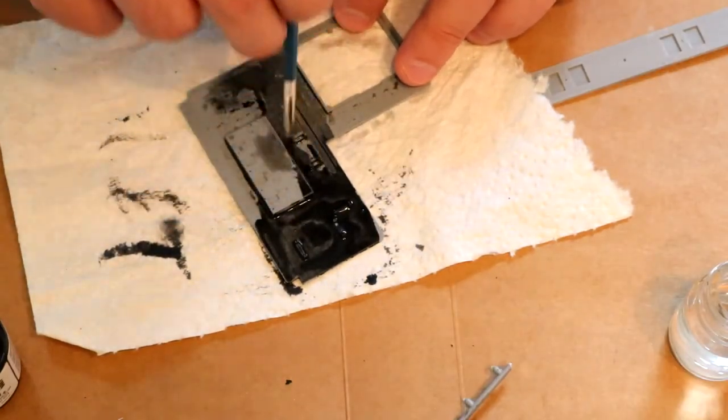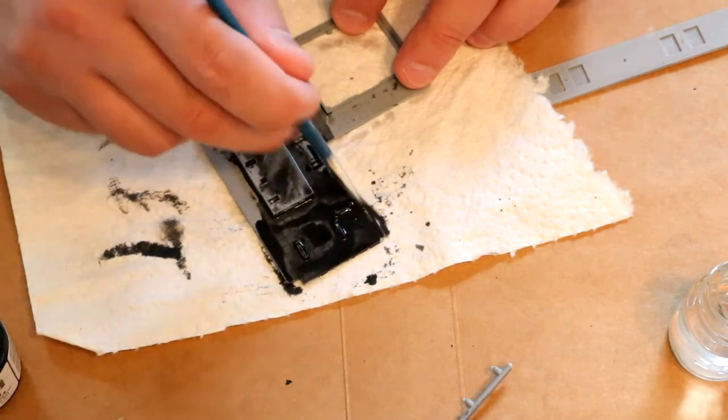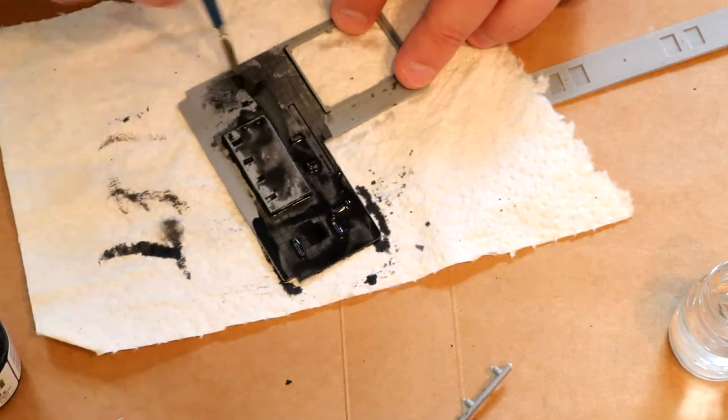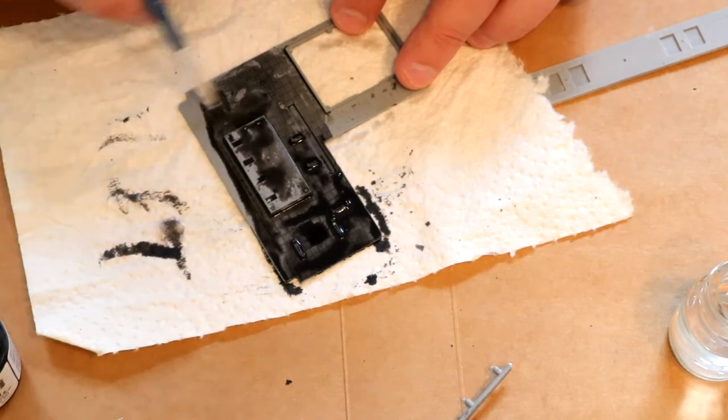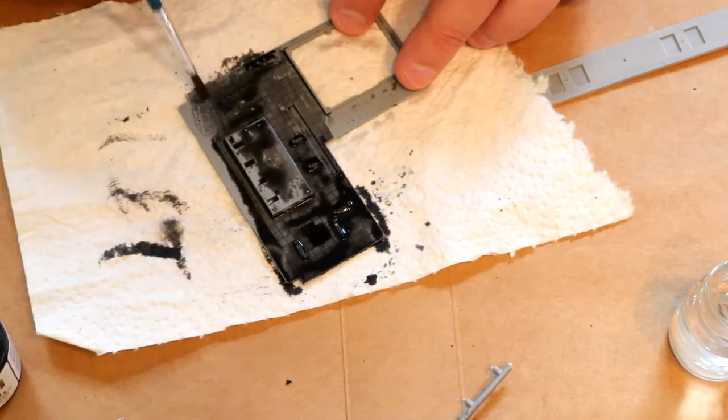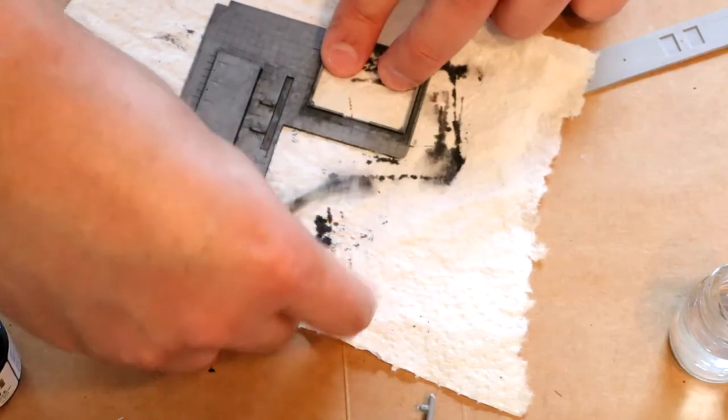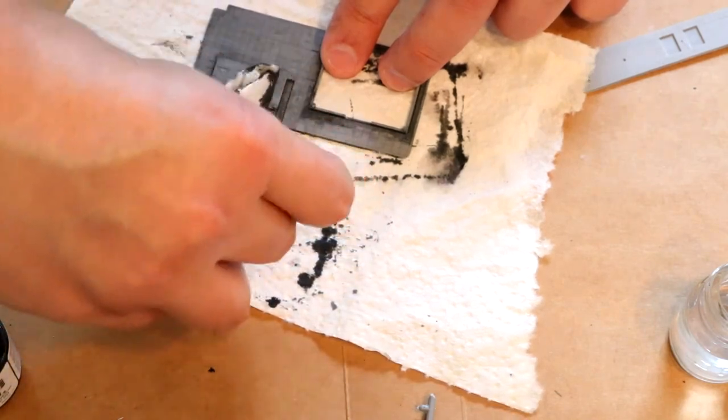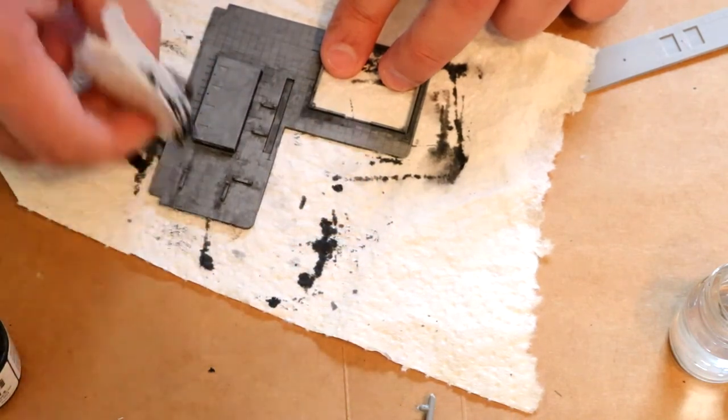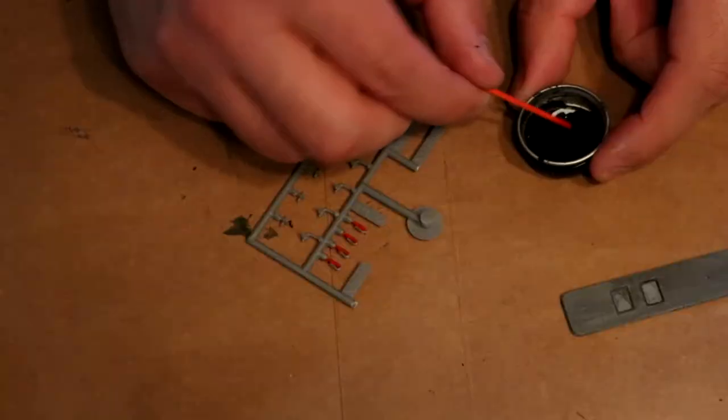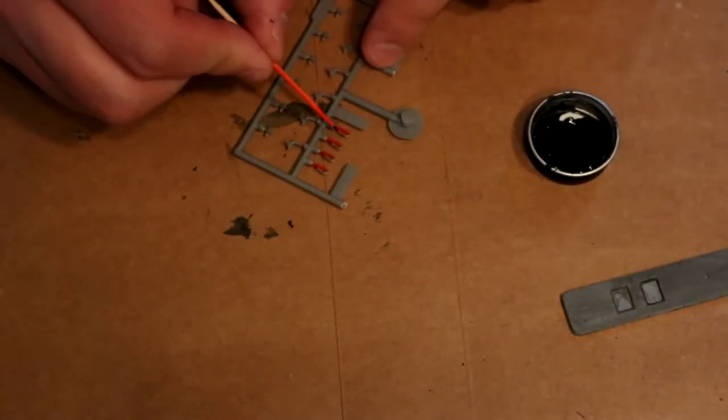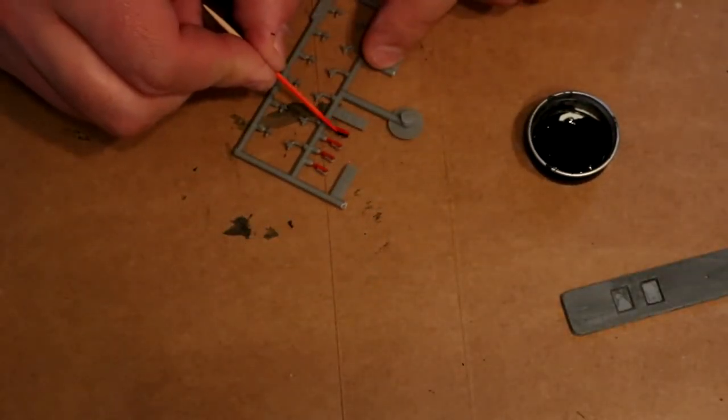I then had the idea to put down a layer of watered down engine black flat paint prior to laying the concrete color, in hopes that it would enhance the cracks and textures in the plastic once it was painted. At least in this case, it didn't seem to work and was basically a waste of time. While some paint was drying, I took the time to paint the fire extinguishers with a toothpick.